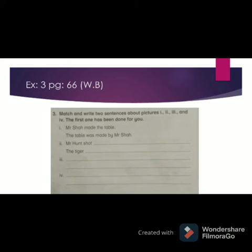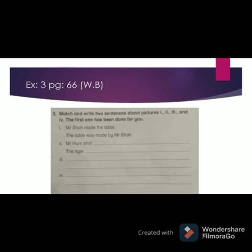After this, we have Exercise 3 on page 66. In this exercise, match and write two sentences about pictures 1, 2, 3, and 4. The first one has been done for you: 'Mr. Shah made the table' — in passive: 'The table was made by Mr. Shah.' Second: 'Mr. Hunt shot the tiger' — 'The tiger was shot by Mr. Hunt.' Third: 'Mr. Mouse ate the cheese' — 'The cheese was eaten by Mr. Mouse.' Fourth: 'Mr. Abdul caught the thief' — 'The thief was caught by Mr. Abdul.'